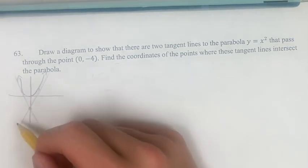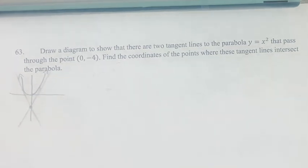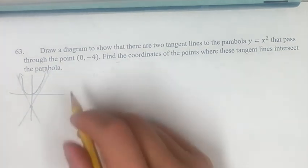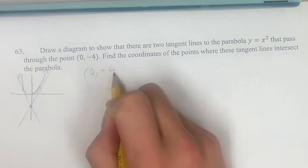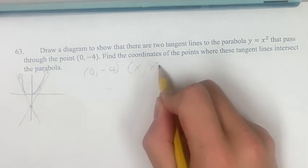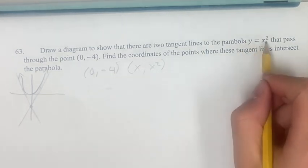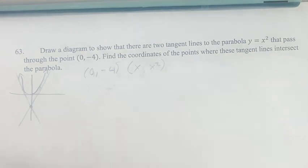So first, we want to find the slope of these lines. We know one point is (0, -4), and we know another point is going to be (x, x²) for any x. This is just following this form. When you plug in x, you get x squared for y.